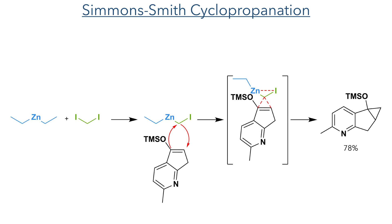This was then subject to a Simmons-Smith cyclopropanation. Diethyl zinc was reacted with diiodomethane and this undergoes alkyl exchange to generate the active intermediate. A concerted addition occurs between the double bond and the zincated carbon and forms the cyclopropane group in a 78% yield.